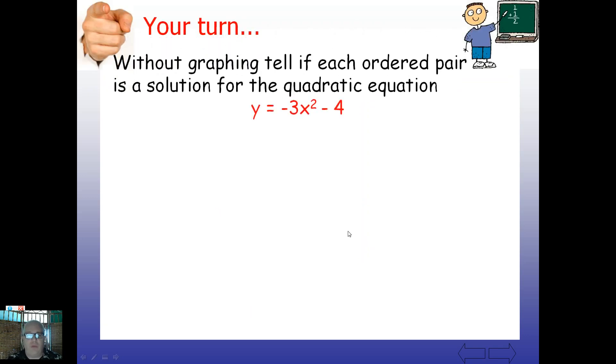All right, so without graphing, tell if each ordered pair is a solution to the quadratic equation. So I've given you one here, y equals negative three x squared minus four. This is going to challenge your order of operations now, like we've always stressed. Remember, exponents first, then multiply by negative three, and then subtract four. So go ahead and you've got two comma one, and you've got another ordered pair, negative one, negative seven. So give those a try. Go ahead and pause the video, try those on your own, and see what you come up with.